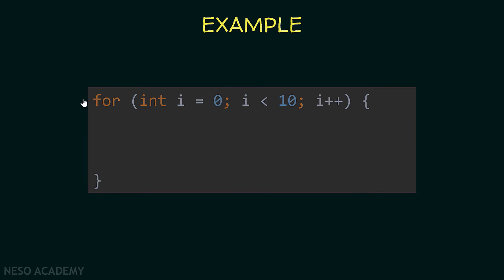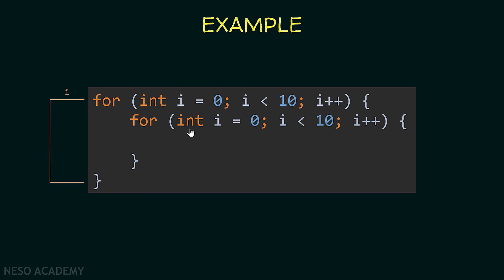Another example: if we declare a variable i inside the block of the main method and then declare another variable i inside the block of a for loop that is nested inside the main method, the block of the for loop is nested inside the block of the main method. So we cannot have variables of the same name inside nested blocks — this code will give us an error. This is why usually we call the inner variable j, so the names of the two variables should be different.